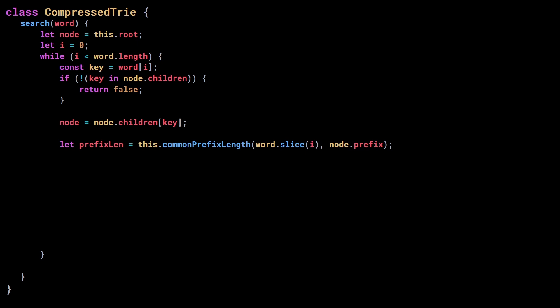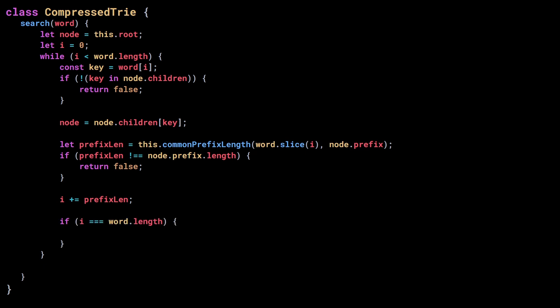To do that, I use the common prefix length method to get the number of matching characters. Because we are looking for a perfect match, the prefix length should equal the node's prefix length. If it does not, we return false. If they are equal, we increase i to move up to the next node. But before that, we check if this is the end of the word — if it is, we return node.isEndOfWord. Finally, we add a return false after the while loop, and we are done.